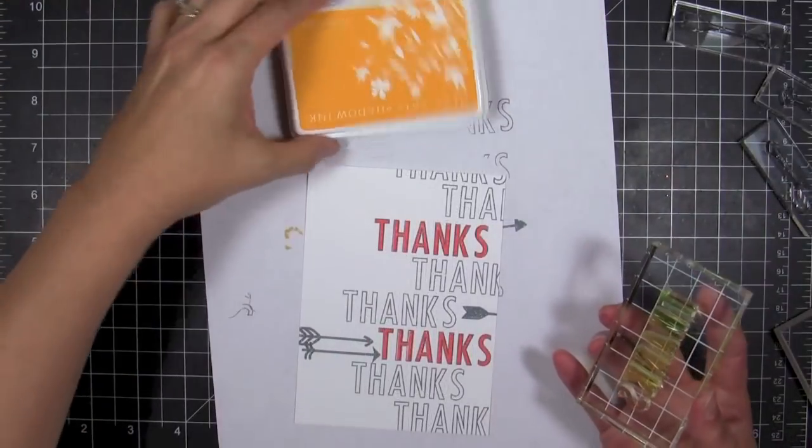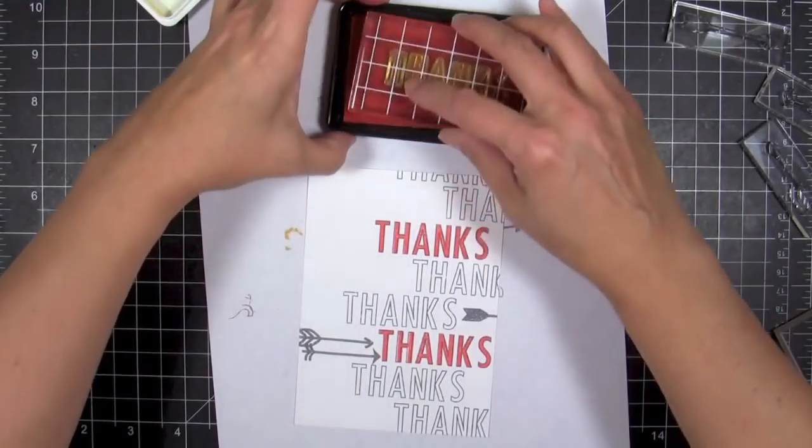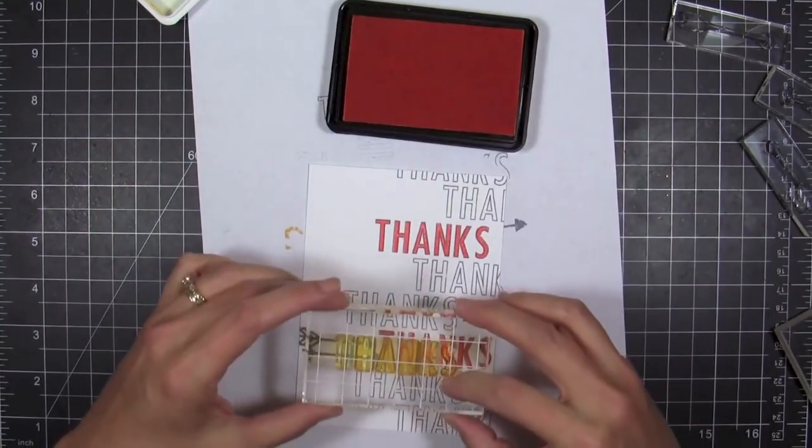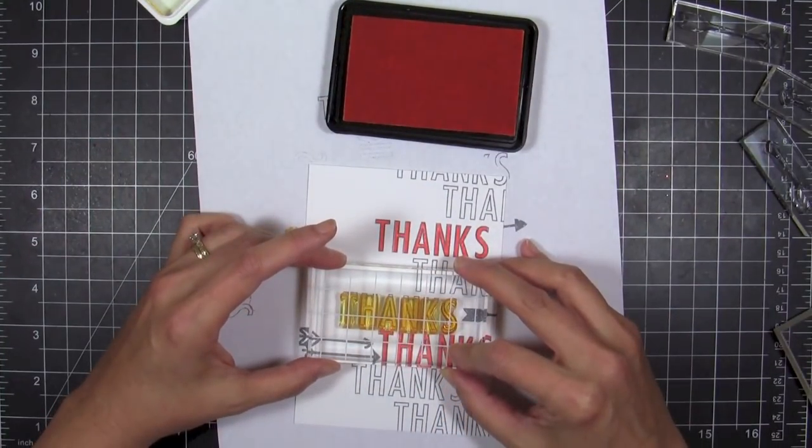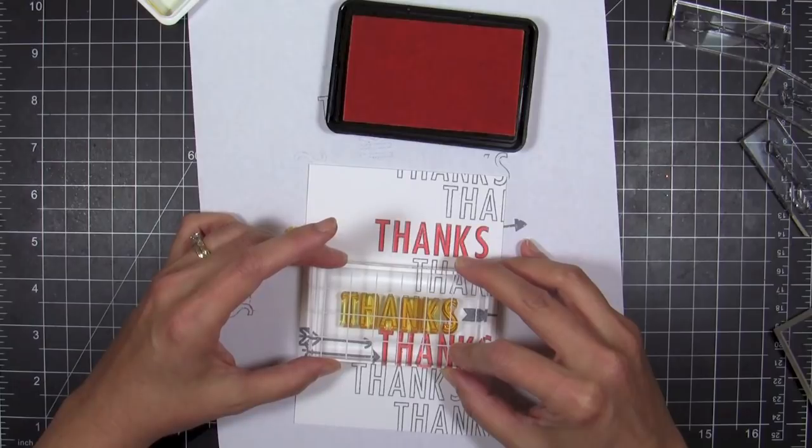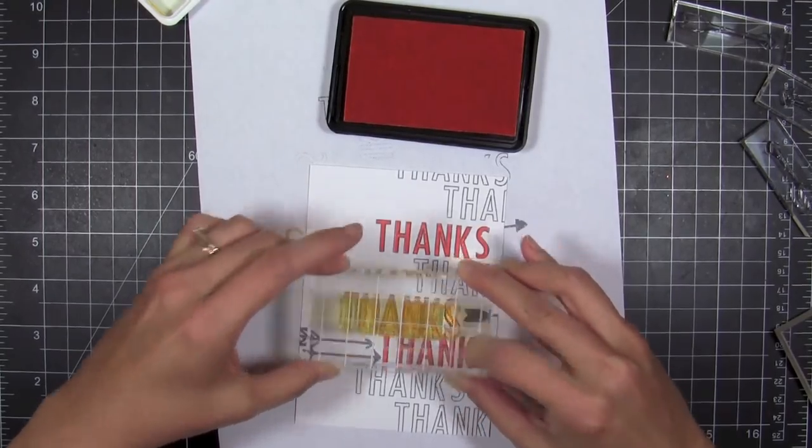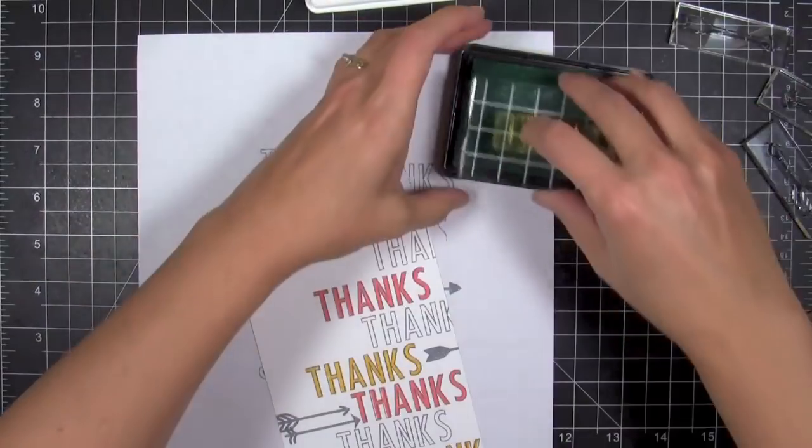So I'm going to ink up with mountain rose. And then when I'm done stamping with that color, I'm just going to clean the stamp. And now I'm going to switch to Butter Bar, which is a really yummy and delicious color of ink and nice warm yellow. And then I'm going to add some Soft Pool.